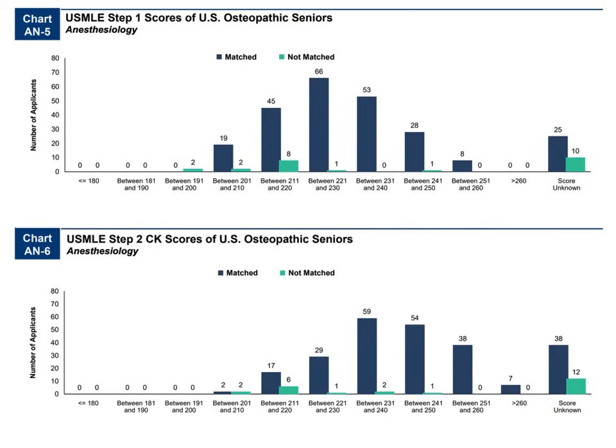These charts show USMLE Step 1 and Step 2 scores for DO students who elected to take USMLE when matching into anesthesiology. For goal setting, you want to be between 221 and 230 on Step 1, with 230 or higher being more beneficial. For USMLE Step 2, you want 231 or higher — between 231 and 240, students have the greatest chance of matching.